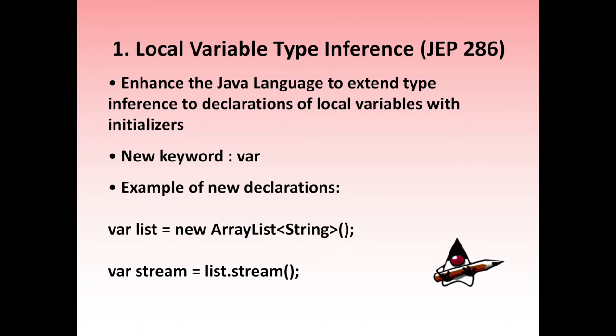Feature 1: Local Variable Type Inference, in JEP 286. Similar to JavaScript, Kotlin, and Scala, now Java will also have a var keyword that allows you to declare a local variable without specifying its type. The type will be inferred from context. For example, when you write var name equals Java, the compiler will already know the type is String. It looks like Java is going the way Scala and Kotlin are, trying to incorporate changes from there.